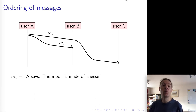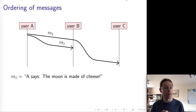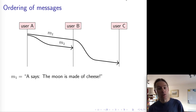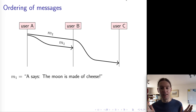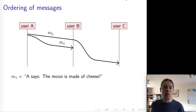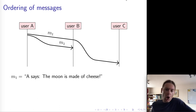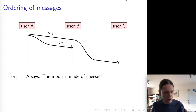In the last part of this lecture, we are going to look at the relative ordering of different messages and different events that can happen in a distributed system, and how we might use time in this context. Let's start with an example of a discussion thread on the internet — one of those typical highbrow discussions where one user says 'the moon is made of cheese,' and another user responds saying 'no, you are wrong.' We are going to model this kind of discussion thread here.